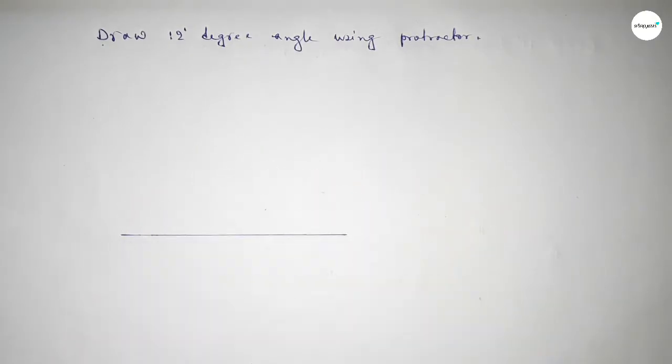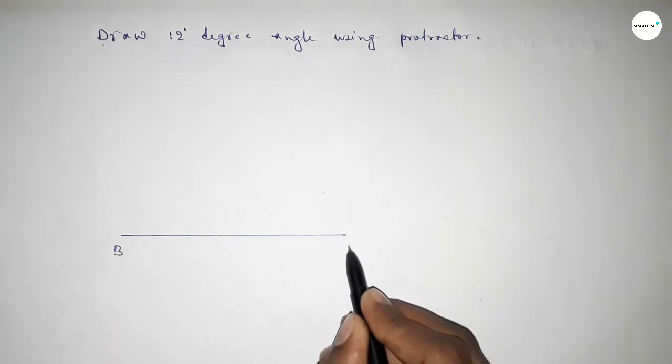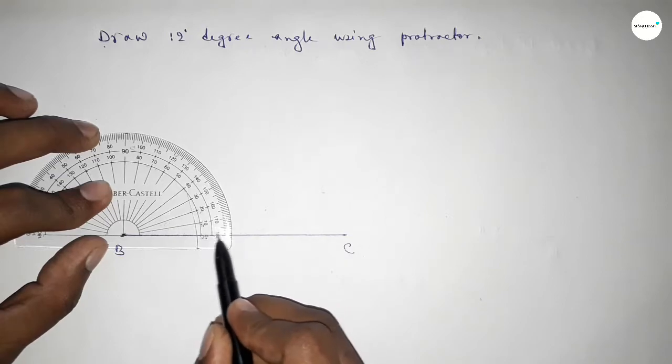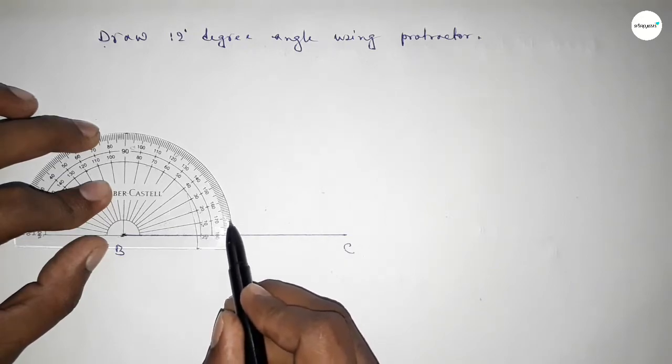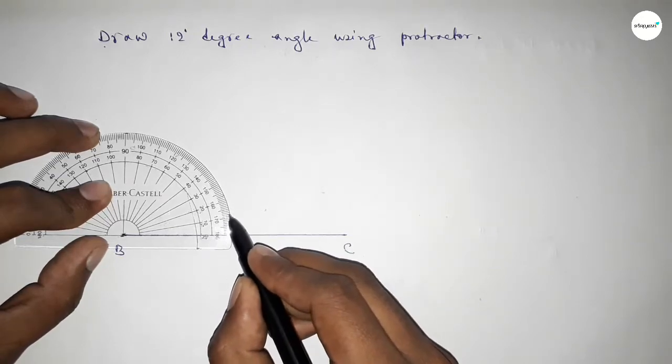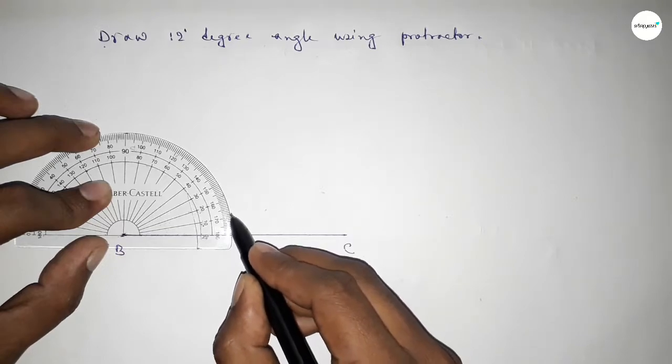line of any length, taking here point B and here point C. Now putting the protractor on point B and counting 12 degrees. So this is 1, 2, 3, 4, 5, 6, 7, 8, 9, 10, 11, 12. So this is 12 degrees.